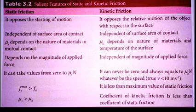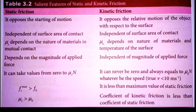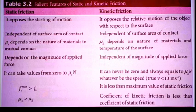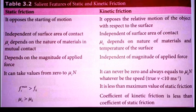Kinetic friction is never zero, because the object is already moving and there is no rest position — it will always have a value of μk × N. When compared to static friction, the kinetic friction value is less in maximum. The coefficient of kinetic friction is less than the coefficient of static friction. These points are very important students, so please remember this comparison table.